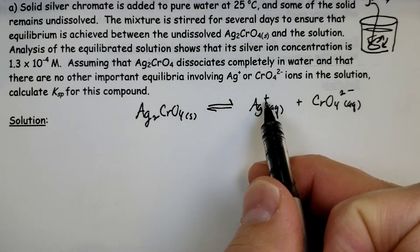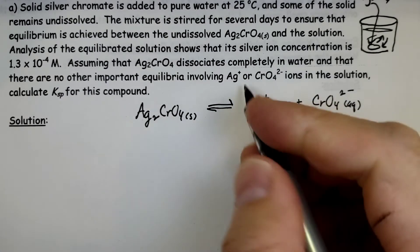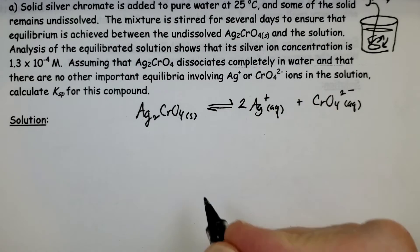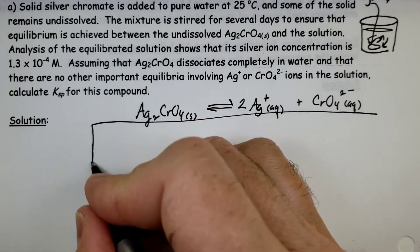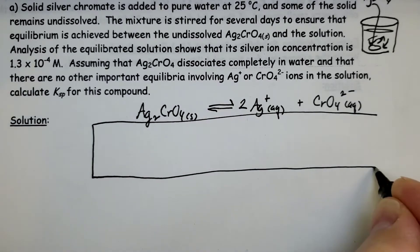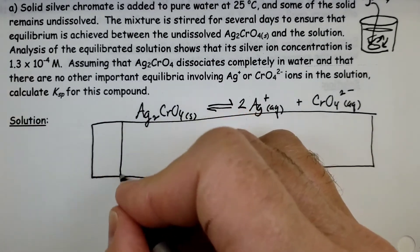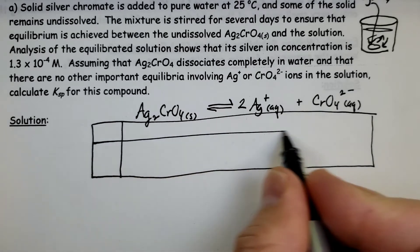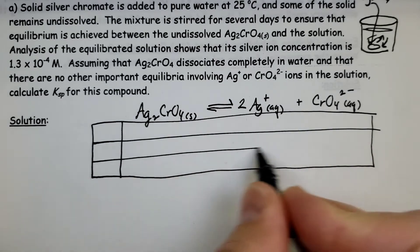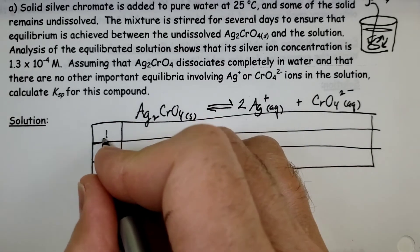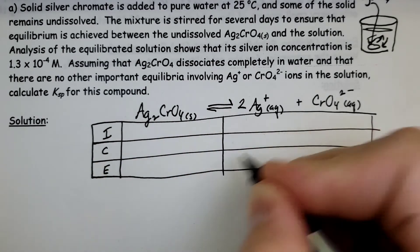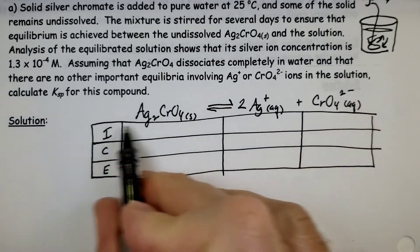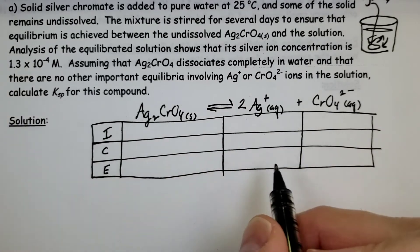Since silver is plus 1, chromate is 2 negative, we need to have 2 silvers. How we handle this question and all these questions is very similar to what we did in the first part by making an ICE chart. We're going to look at initially what's going on, what the equilibrium scenario is, and then we can look at the change that's happening. We're going to break it down into initial amount, change, and equilibrium.